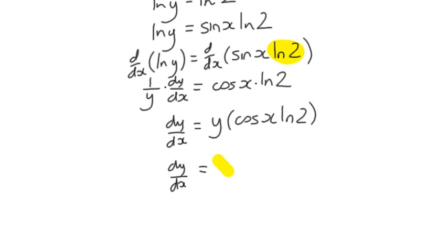So we substitute in our last line here that it's 2 to the power of sin x multiplied by cos x times the log of 2.